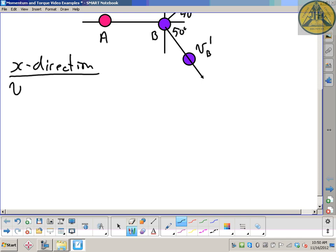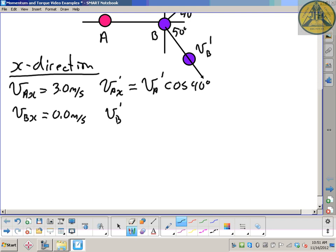Initially in the x direction, object A has a velocity of three meters per second. So that's essentially all of our momentum. Object B in the x is going zero. After the collision, object A's x component, we don't know. We don't have a number. We do have the angle. So we're going to incorporate the angle by remembering that it's the magnitude after the collision, cosine the angle. Object B after the collision, x direction, is its magnitude, cosine 50, its angle.